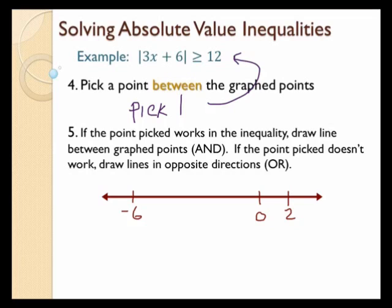If that 1 works in the inequality — if it makes it true — then it's an 'and,' meaning everything between the two numbers works, and I can highlight the graph like an and inequality. We're bringing back 'and' and 'or' concepts from earlier. If the point picked doesn't work, then nothing between the two points works — everything else works — so it becomes an 'or.'